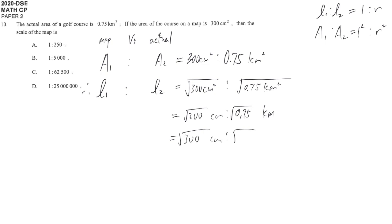Just simply use what you have learned in primary school. 1 km equals 1000 meters, which equals 100,000 cm.